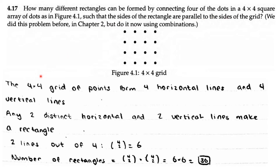This is the 4x4 grid with an array of dots. The 4x4 grid points form four horizontal lines and four vertical lines. Any two distinct horizontal lines and two vertical lines make a rectangle. The number of ways to choose two lines out of four is C(4,2), which equals 6.